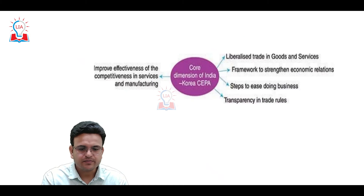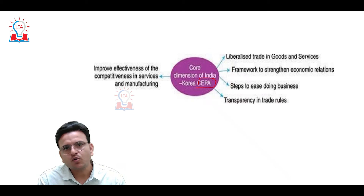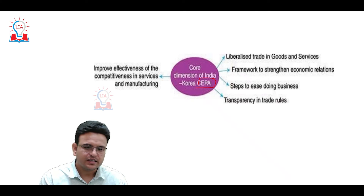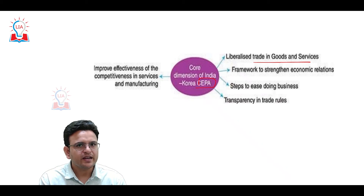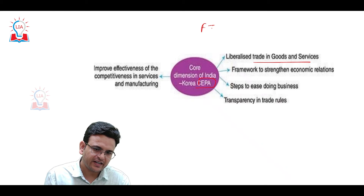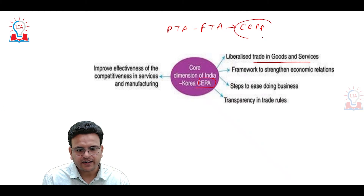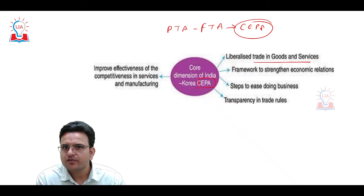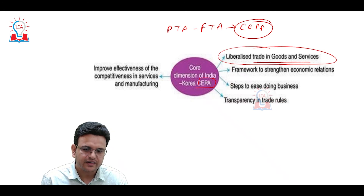To utilize these objectives, India and South Korea have started the Comprehensive Economic Partnership Agreement, which liberalizes trade in goods and services between the two countries. This goes beyond a preferential trade agreement or free trade agreement — CEPA is a more liberal arrangement that helps improve trade between the two countries and provides a framework to strengthen economic relations.